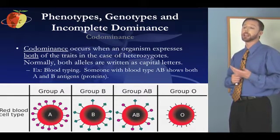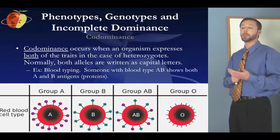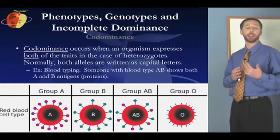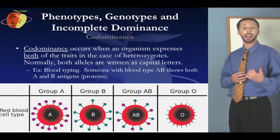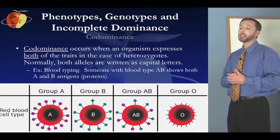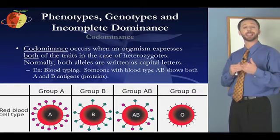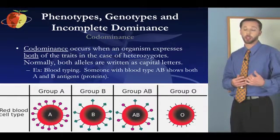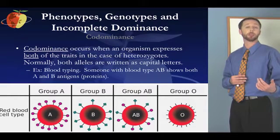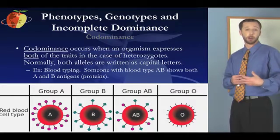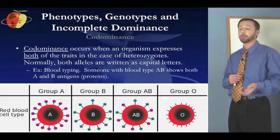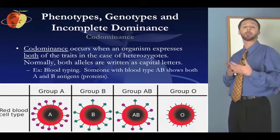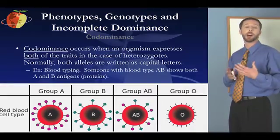Another example of codominance is blood typing. Someone with blood type AB shows both A and B antigens. Because they have both antigens, they can accept donations of blood that are type A, B, or AB. In the case of blood type O, that is basically co-recessive — both recessive genes show up and there are no A or B antigens. So group O can donate to any blood type without being rejected, but can only receive blood from other O's. That's why AB is called the universal recipient and blood type O the universal donor.